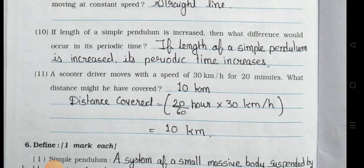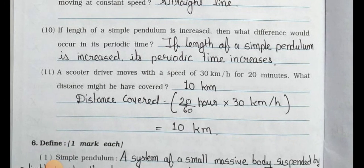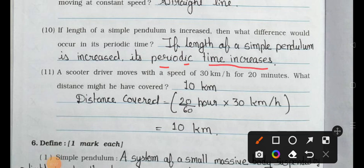Now see question number 10: if the length of a simple pendulum is increased, then what difference would occur in its periodic time? Answer is: if the length of a simple pendulum is increased, its periodic time increases.